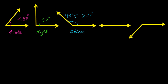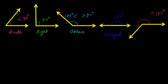In the next diagram, you can have the angle exactly 180 degree, so its measure is exactly 180 degree, so such type of angle is known as straight angle. In the following diagram, if you measure the angle, you will notice that it is greater than 180 degree and it is less than 360 degree, so an angle whose measure is greater than 180 degree and less than 360 degree is known as reflex angle.